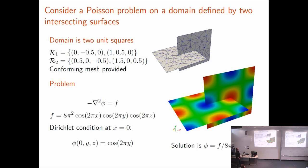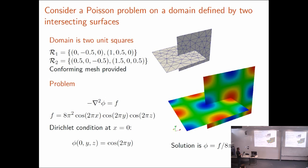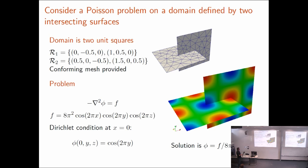Suppose someone were to come up to you with this domain that consists of two intersecting squares, and they asked you to solve the Poisson equation on this domain. Your first reaction would probably be to say that domain is not differentiable and you can't do that. But if they insisted you think about it, you might sit down and write down this solution, noting that it satisfies all the boundary conditions — a Dirichlet condition here, and Neumann conditions on all the other edges — and it satisfies the Poisson equation. If you consider these two squares independently, the Poisson equation is satisfied on each of them, and it just happens to agree along the intersection line.